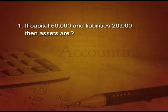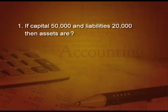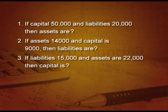Let us check your knowledge. If capital is 50,000 and liabilities are 20,000, then assets are 70,000 because Capital + Liabilities = Assets. Next, if assets are 14,000 and capital is 9,000, then liabilities are 5,000. If liabilities are 15,000 and assets are 22,000, then capital is 7,000, because Assets = Liabilities + Capital.